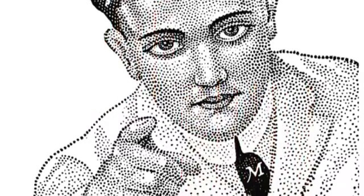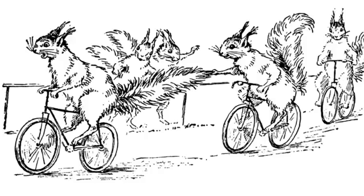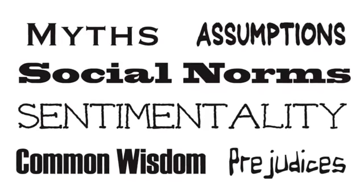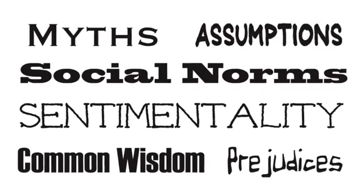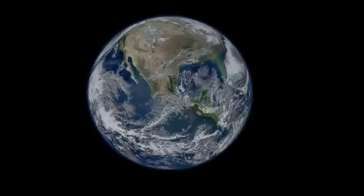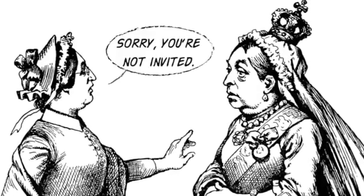We've all heard the phrase 'get real' at one time or another, usually when someone thinks we're being childish or living in a fantasy land. In American literature, the realist movement expresses a similar idea. Popular from around 1865 to 1900, realism challenged readers to look past myths, assumptions, social norms, and other expectations in order to see the world as it really is.